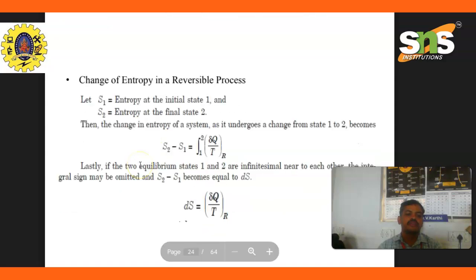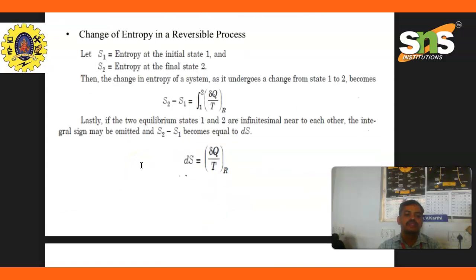Change in entropy in a reversible process: S1 equals entropy at initial state 1 and S2 equals entropy at final state 2. Then the change in entropy as the system undergoes a change from state 1 to state 2 is S2 minus S1 equals the integral of del Q divided by T.